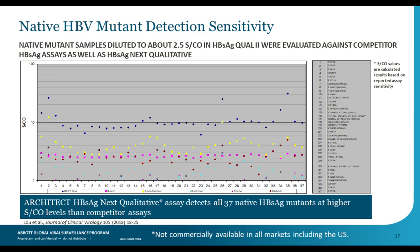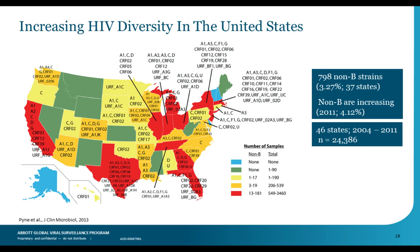Back to HIV in the U.S.: a study performed between 2004 and 2011, a time when people believed the North American epidemic was all group M subtype B. A collaboration with ARUP looking at sequences from samples through this reference laboratory found about 3.27% were non-B strains, sampled from 37 states. The prevalence of non-B strains — including many circulating recombinant forms — was increasing, reaching 4.12% by 2011 and continuing to rise. The diversity is highest in Texas, California, Miami, the Chicago/Midwest area, and New England.